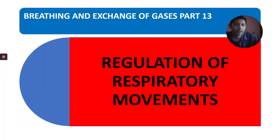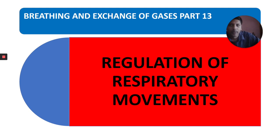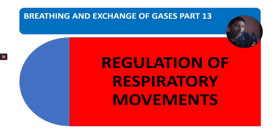In the previous part, Part 12, we covered transport of carbon dioxide. In this part we are going to learn regulation of respiratory movements, a very important topic. Students find this area — transport of carbon dioxide, transport of oxygen, and regulation of respiratory movements — a little bit difficult compared to remaining topics. Generally, most exam questions come from respiratory volumes and capacities, transport of oxygen and carbon dioxide, and regulation of respiratory movements. Especially important for NEET are: disorders of respiratory system, respiratory volumes and capacities, transport of oxygen and carbon dioxide, and the oxy-hemoglobin dissociation curve.